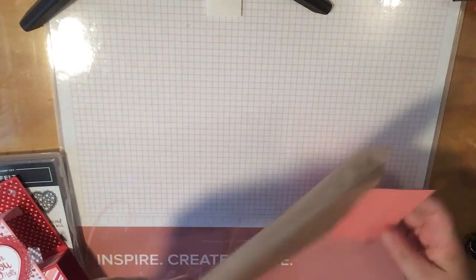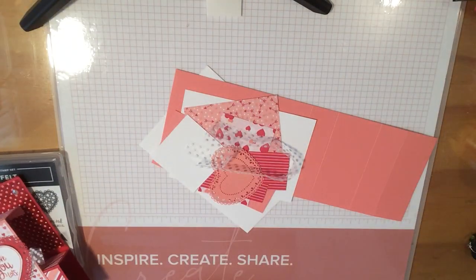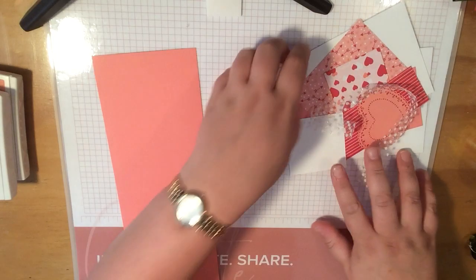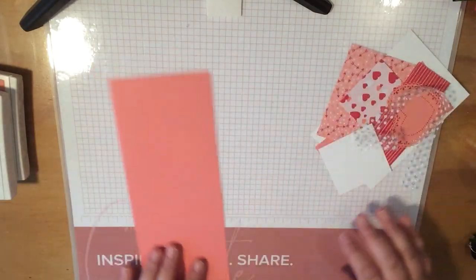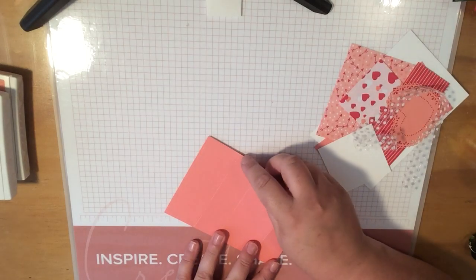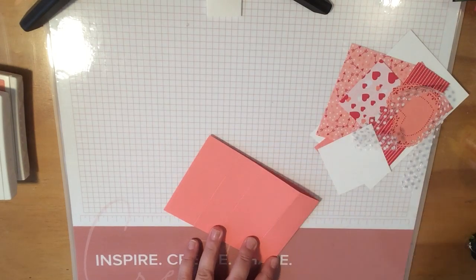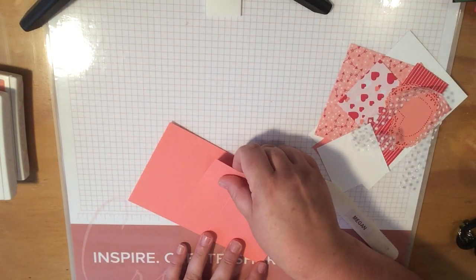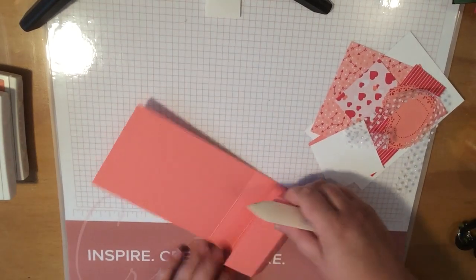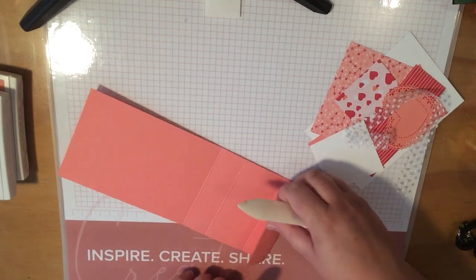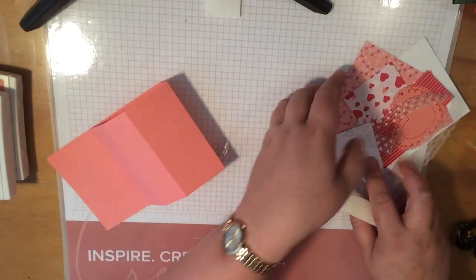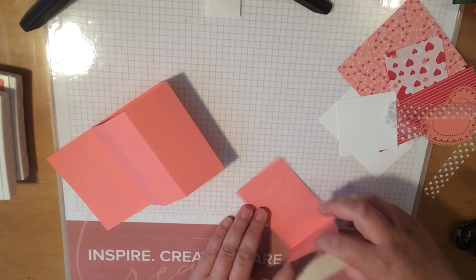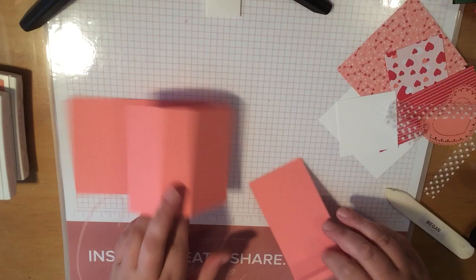I have everything prepared here ready to go. So we're going to start by folding the score lines of the card base. Now I'm going to have all the measurements up on my blog for this, so that I don't tell you all the wrong measurements during this video. So here we go. I'll just define all those score lines, and I will do the same on the panel, what I've called the front panel.